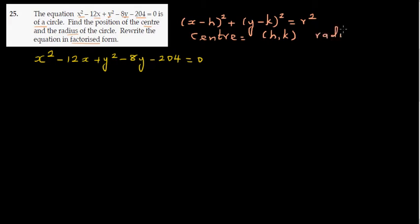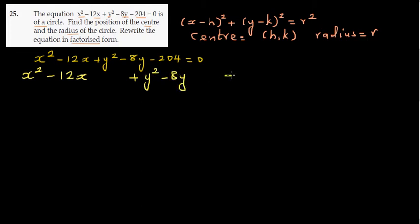We're going to use the completing the square method. I'll write it as x squared minus 12x — leaving a gap — plus y squared minus 8y — leaving a gap — and I'm going to add 204 to both sides, so the constant moves to the right.